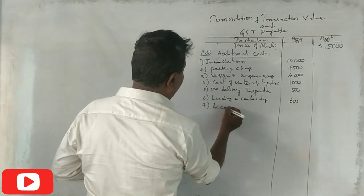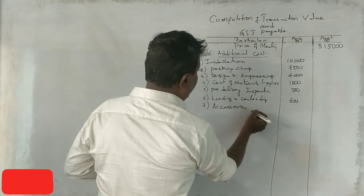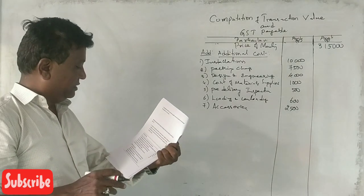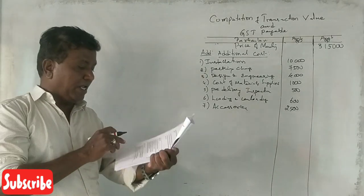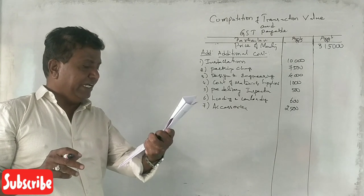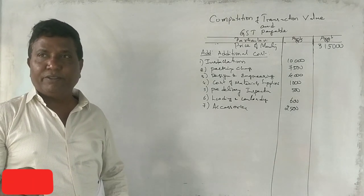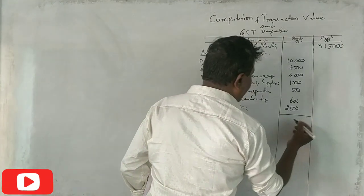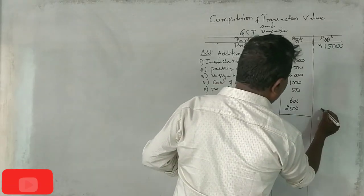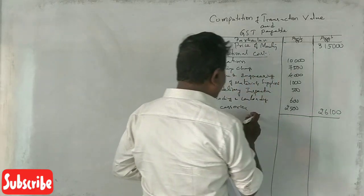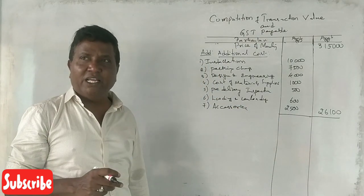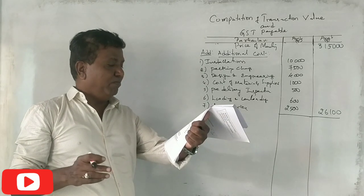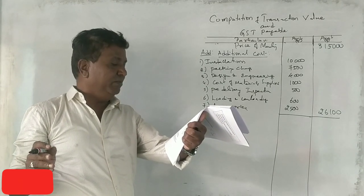Accessories: Rs. 2,500. The bought-out accessories supplied along with the machinery, valued at Rs. 2,500, were necessary for the working of the machinery — similar to a laptop needing a keyboard and mouse as accessories. So the total comes to Rs. 3,41,100.